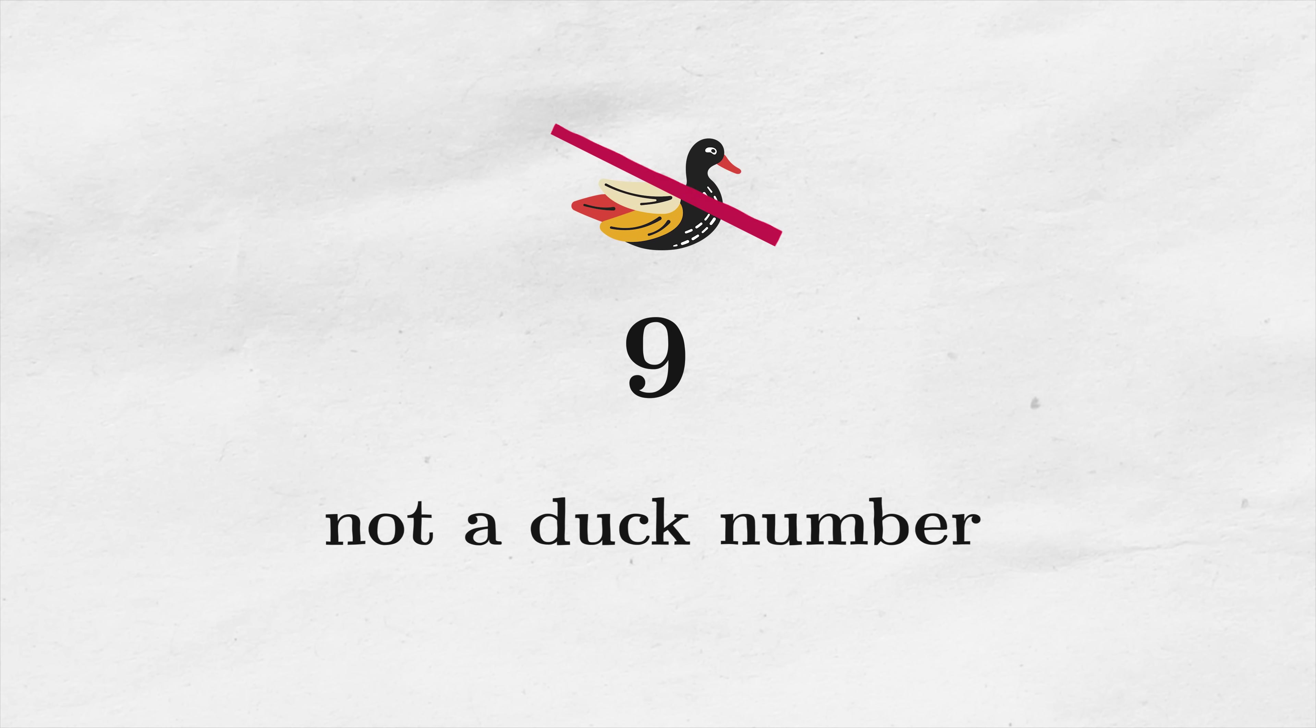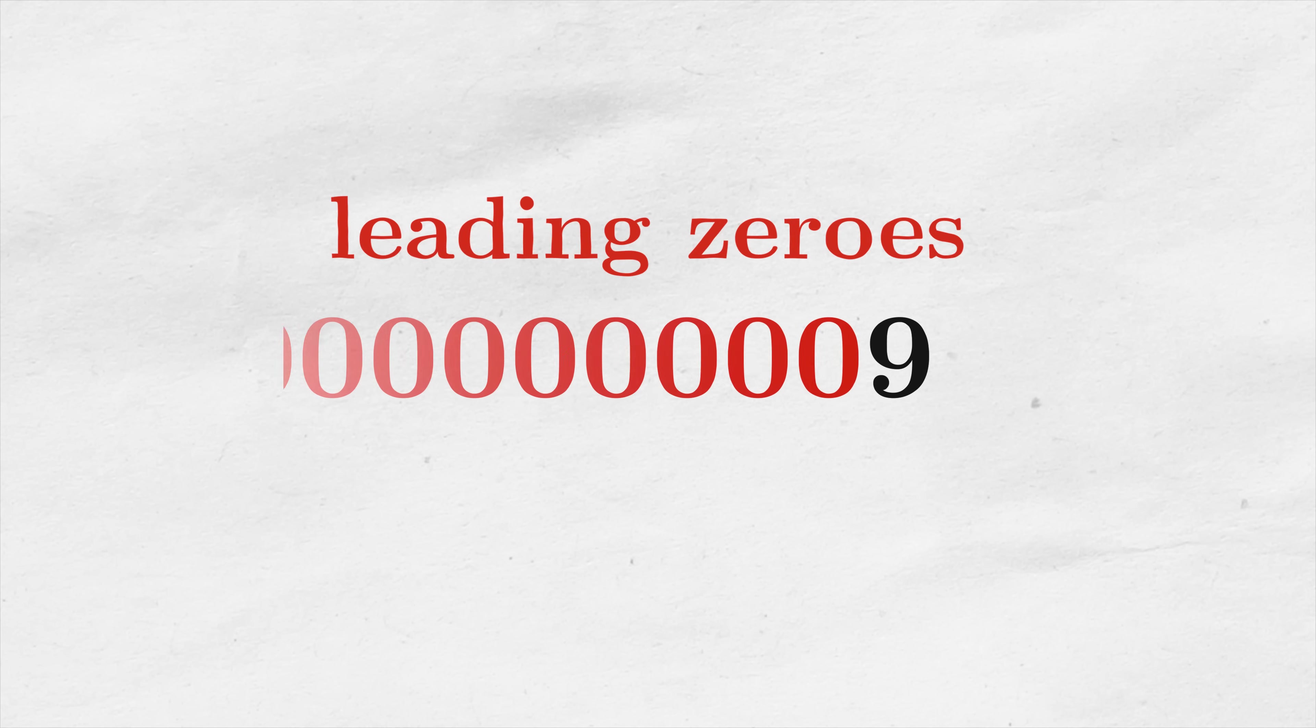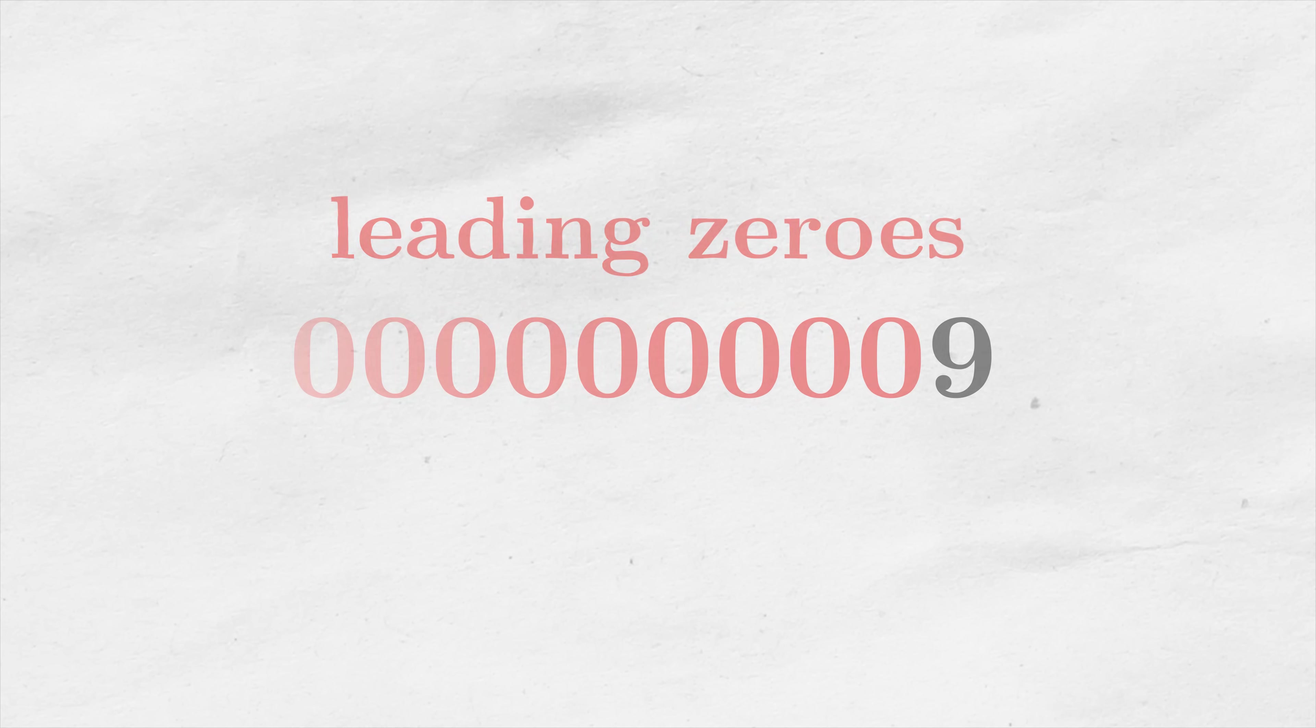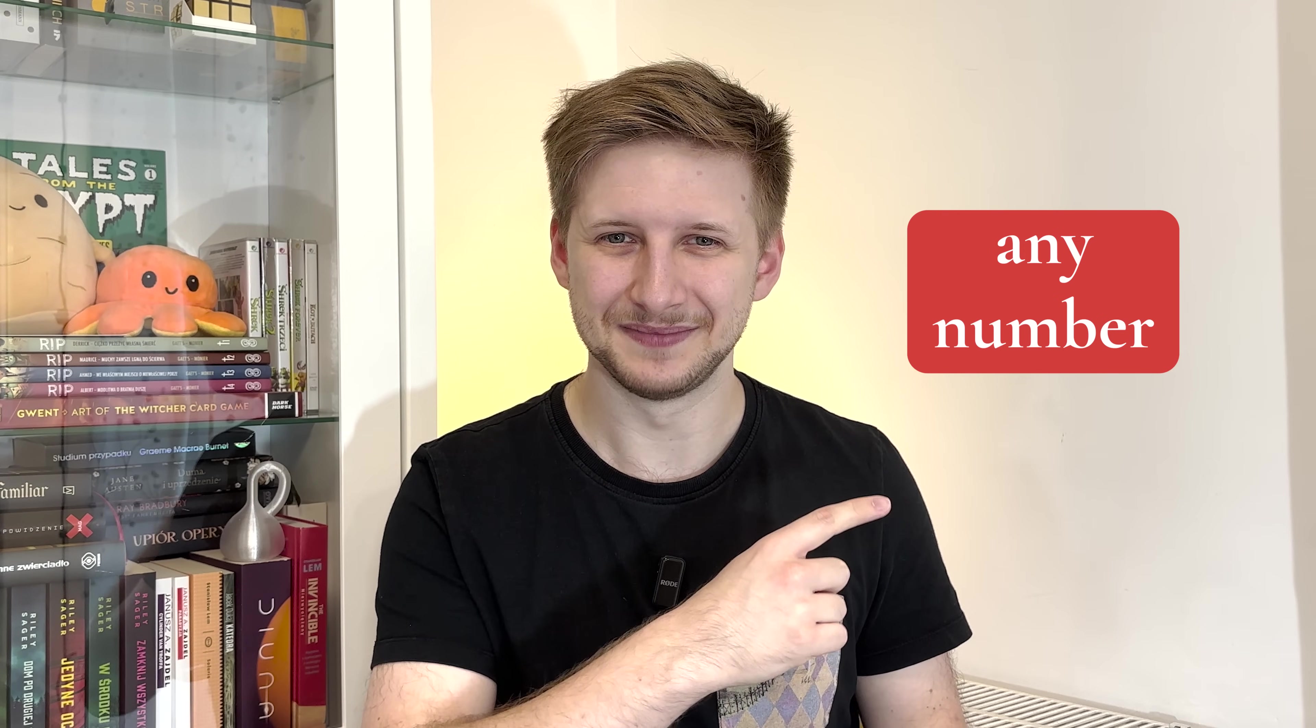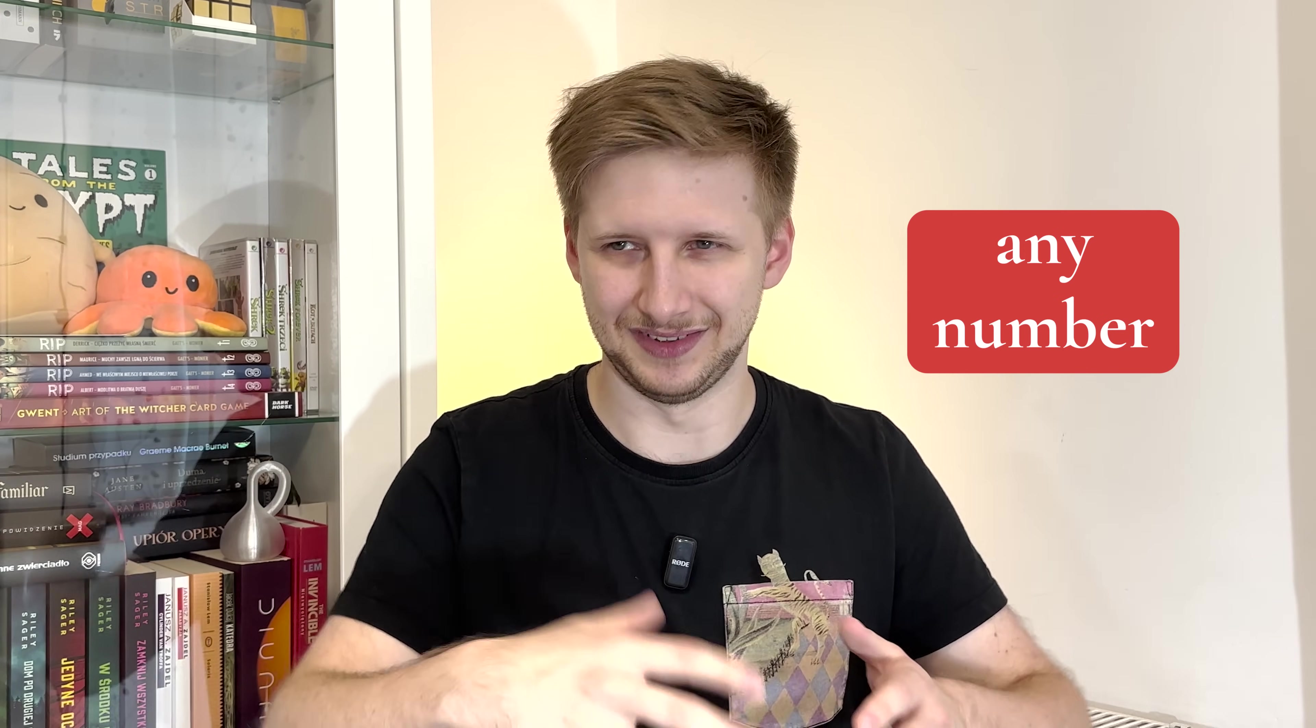If you said so, you would be right. To some extent. In that case, I would say that you are missing a bigger picture, leading zeros, which are the non-visible zeros that come before any number. Oh yeah, the keyword, any number. It means that all numbers have leading zeros, and thus all numbers are duck numbers. Well, I guess that resolves it. Thanks for watching and see you soon.